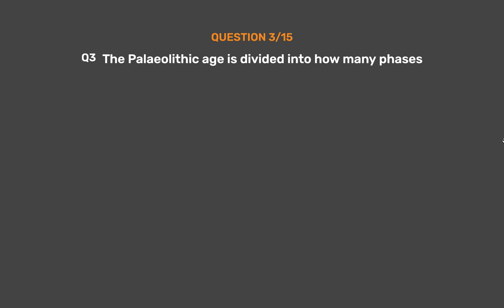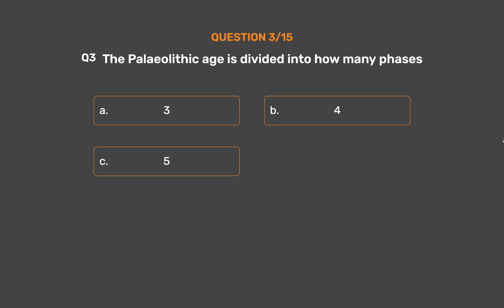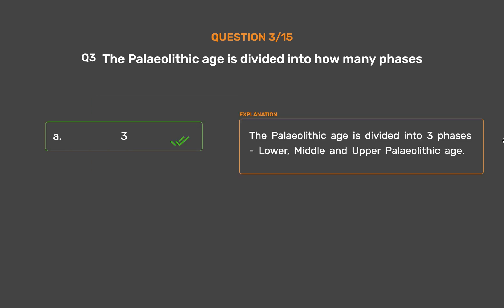Question number three. The Paleolithic age is divided into how many phases? Option A - Three, Option B - Four, Option C - Five, Option D - Two. The correct answer is Option A: Three. The Paleolithic age is divided into three phases: lower, middle, and upper Paleolithic age.